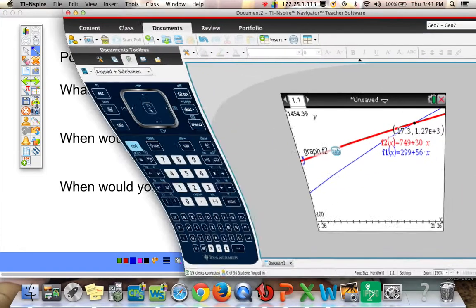So plan A was cheaper up until 17.3 months. Plan A was more expensive. That phone was $749. But you can see at 17.3 months, that plan actually becomes cheaper.